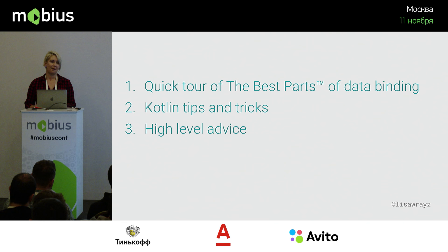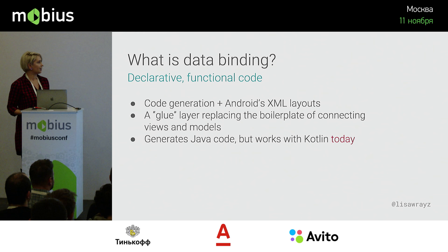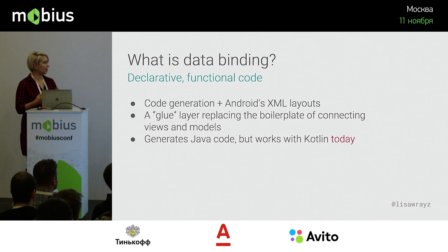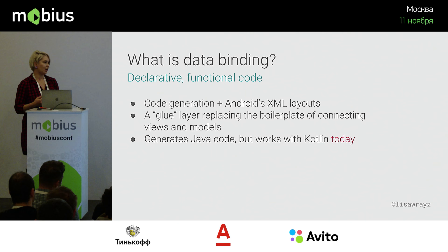I'm very sorry I cannot speak Russian, but this talk will be mostly code — so if I talk too fast, please read my slides. What is data binding, and why would we want to use it? It is an Android framework that helps you write declarative, functional UI code. It generates code from Android's XML layouts, producing the glue layer that replaces all the boilerplate of connecting your views and your data. It generates Java code, but because Java and Kotlin have great interoperability, you can use it easily with Kotlin today.